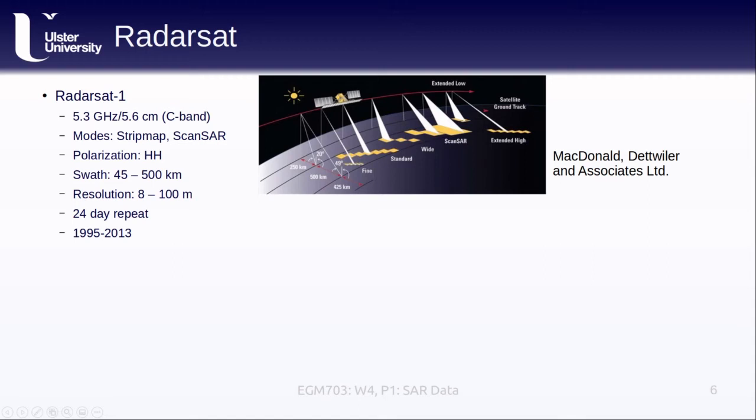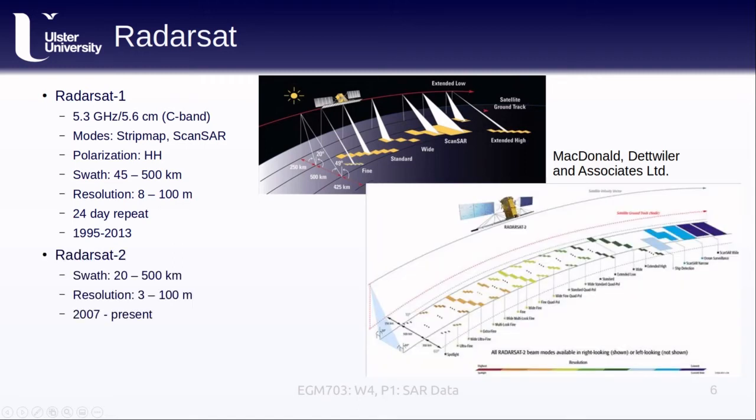You can get Radarsat-1 data from a few different places. Natural Resources Canada has a collection of over 36,000 scenes that are freely available, and they have more that they have not yet processed. Radarsat-2 is similar to Radarsat-1 in that it's a C-band radar with horizontal polarization, but it has even more modes, a finer swath width, and potentially higher resolution depending on the acquisition mode. It was first launched in 2007, and it is still operational today.